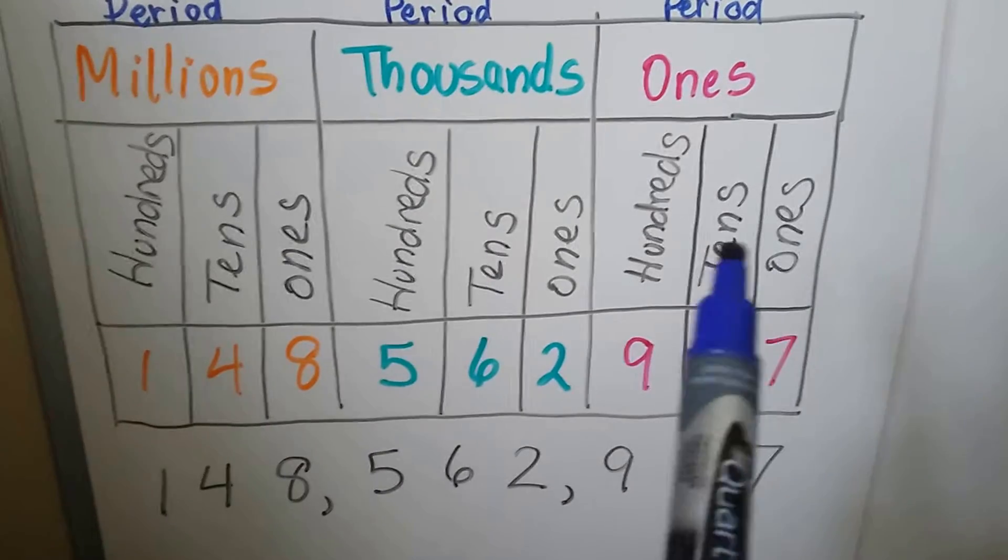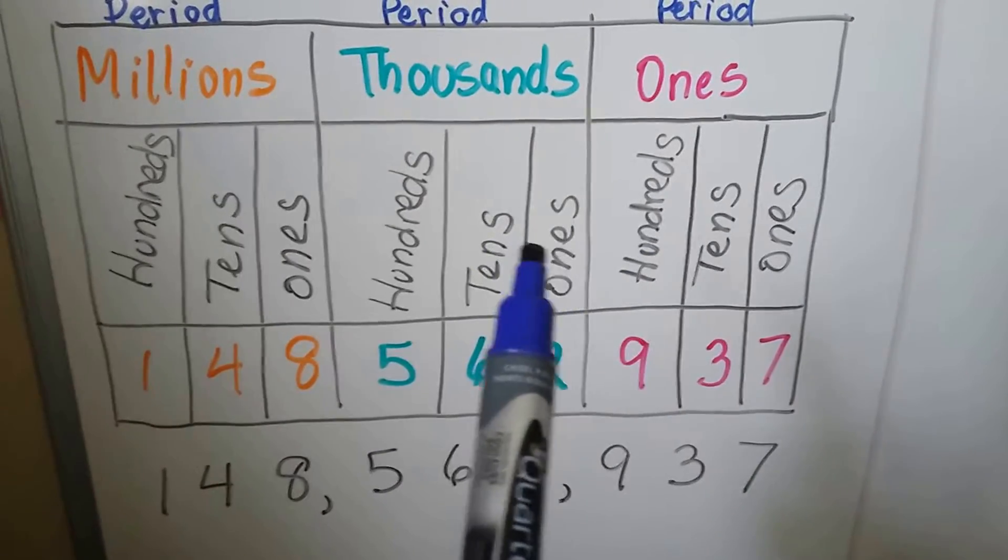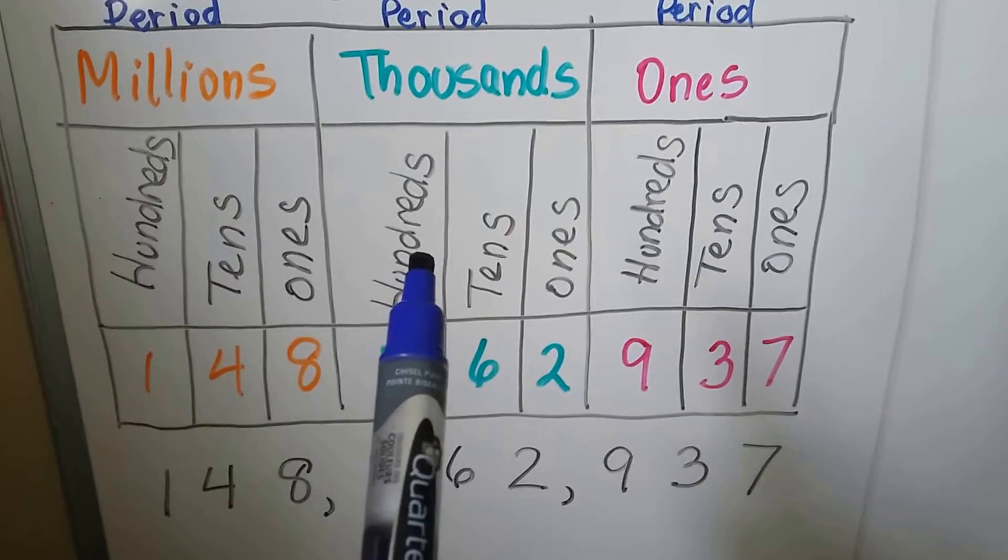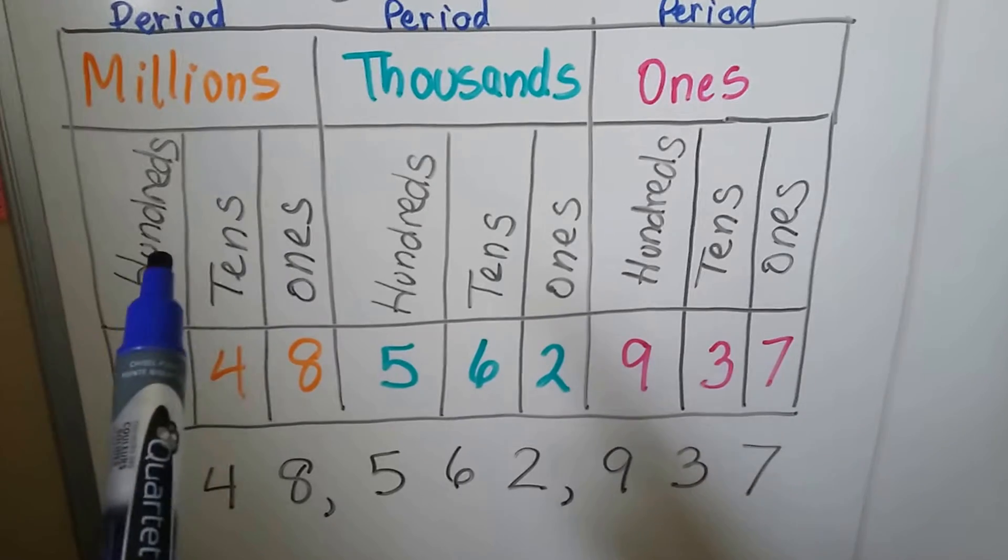The ones period contains the ones, tens, and hundreds. The thousands period contains the one-thousands, ten-thousands, hundred-thousands. The millions period contains the one-millions, ten-millions, hundred-millions.